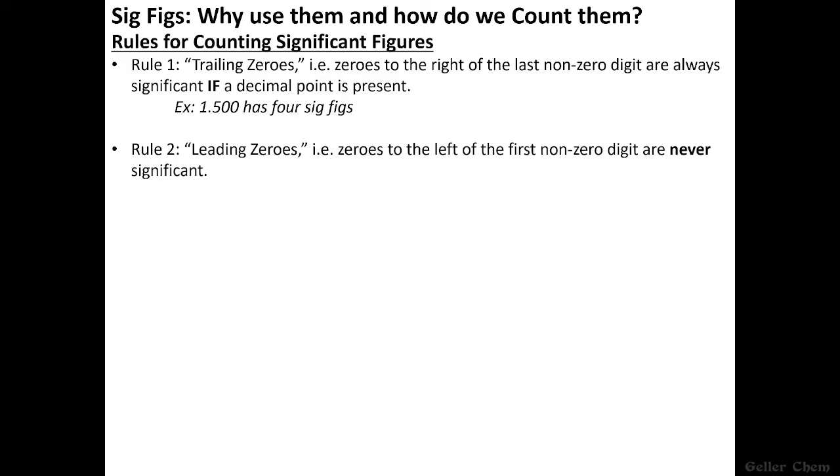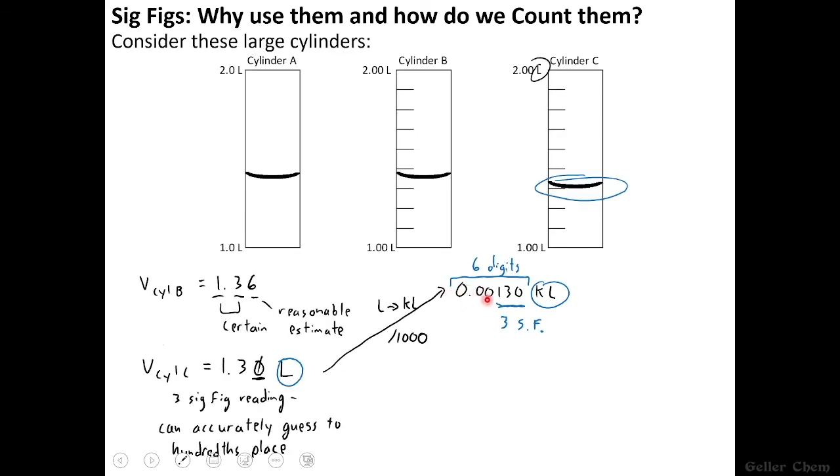And so this is an example of our next significant figure rule. Rule 2. Leading zeros, in other words, zeros to the left of the first non-zero digit, are never significant. So a number like this has three sig figs. All of these zeros here are leading zeros. They are to the left of our first non-zero digit. Again, it's not a pointless rule to learn. The logic of saying that these zeros are insignificant is the same as the logic of saying that these zeros are insignificant.